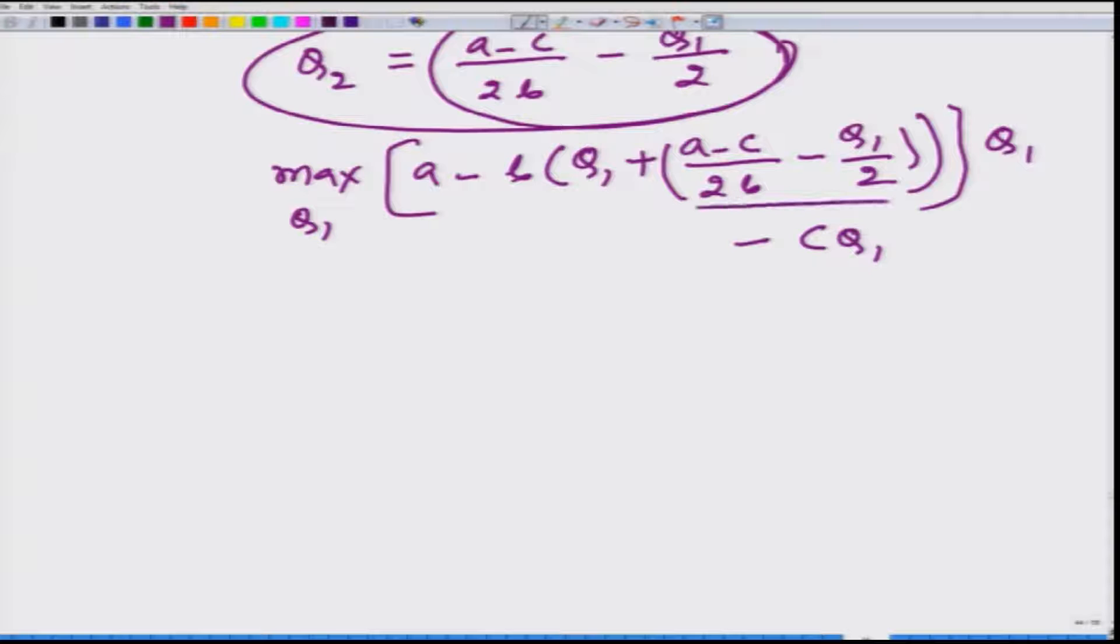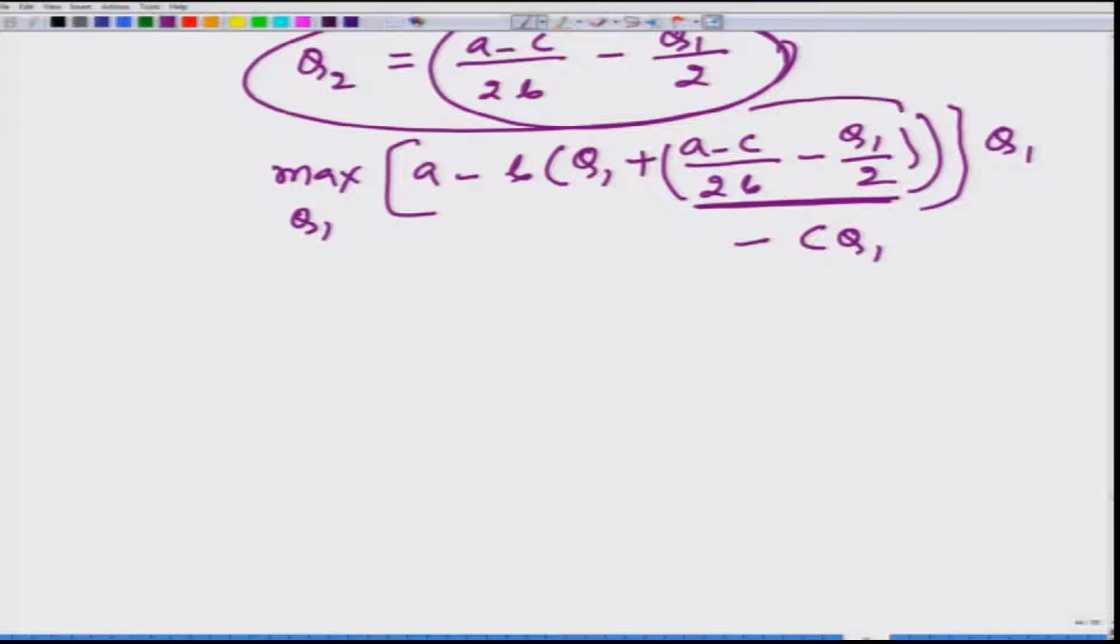Remember in the Cournot problem, we could not do this because firm one did not know what firm two is going to produce. But here even though firm two is going to move after firm one has decided, firm one knows that this is the formula firm two would be using to decide how much to produce. Just let me check that it is correct.